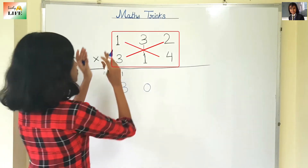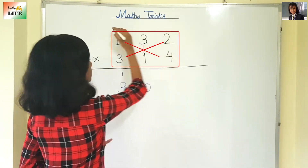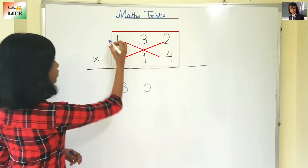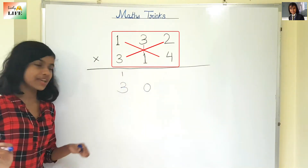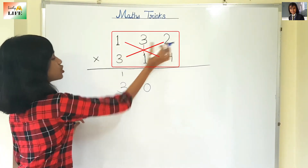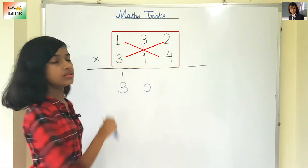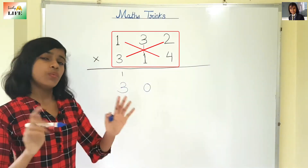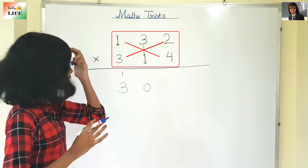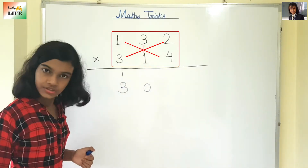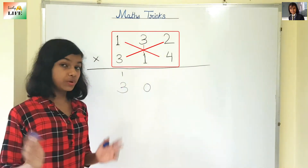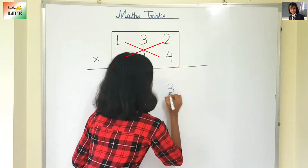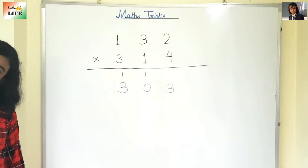Now we move to the third block. First we multiply this one with this one, this one with this one, and this one with this one. So 3×2 is 6, and 4×1 is 4. So 6 plus 4 is 10. Then we also have 3×1 which is 3. So 10 plus 3 is 13. We will not write 13 — we will write 3 and carry 1.